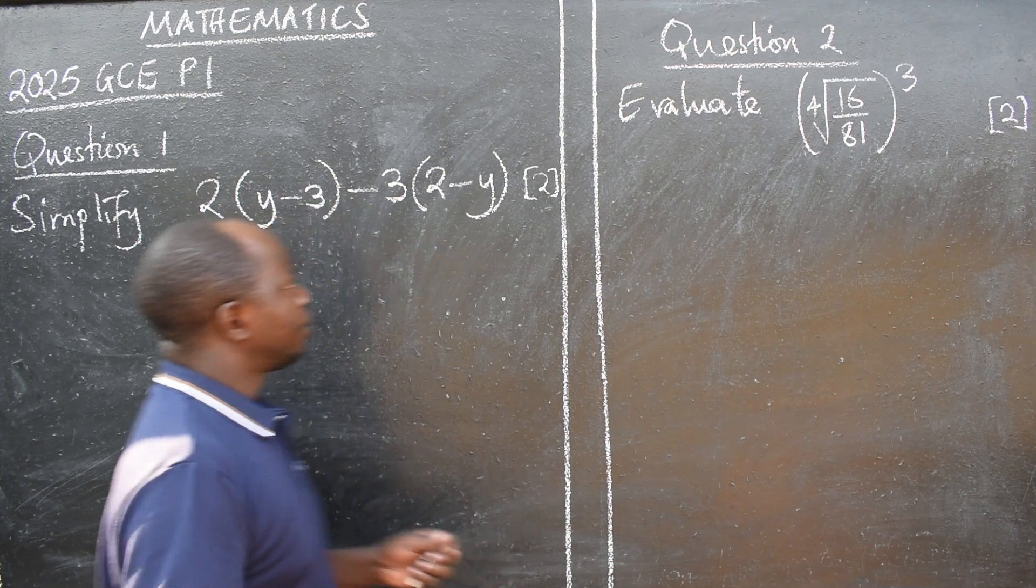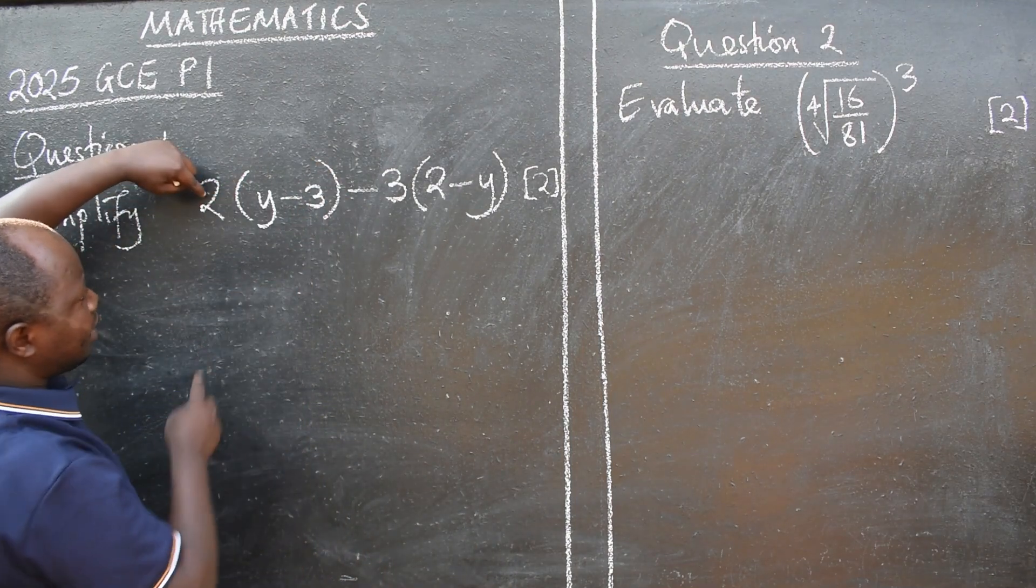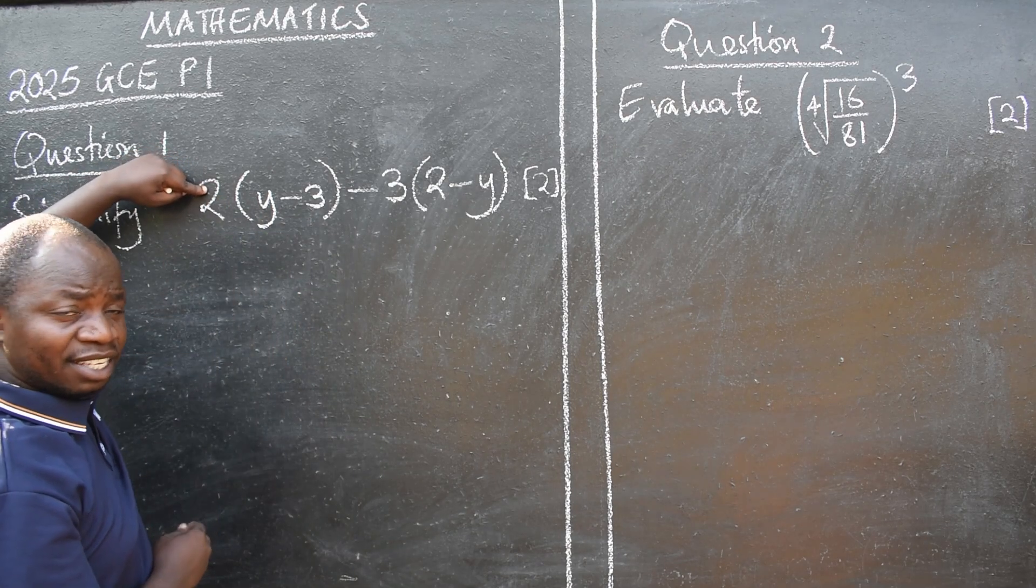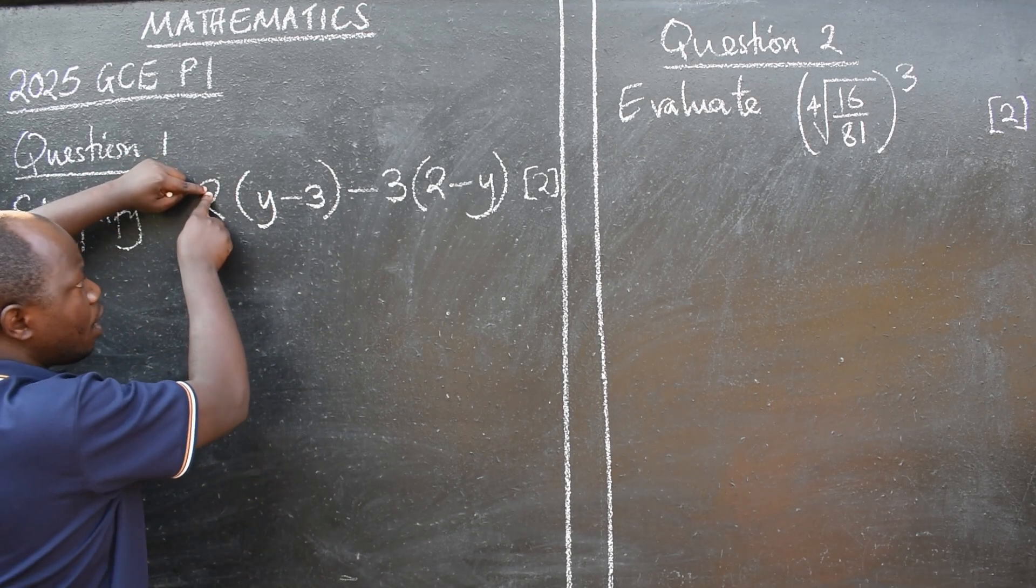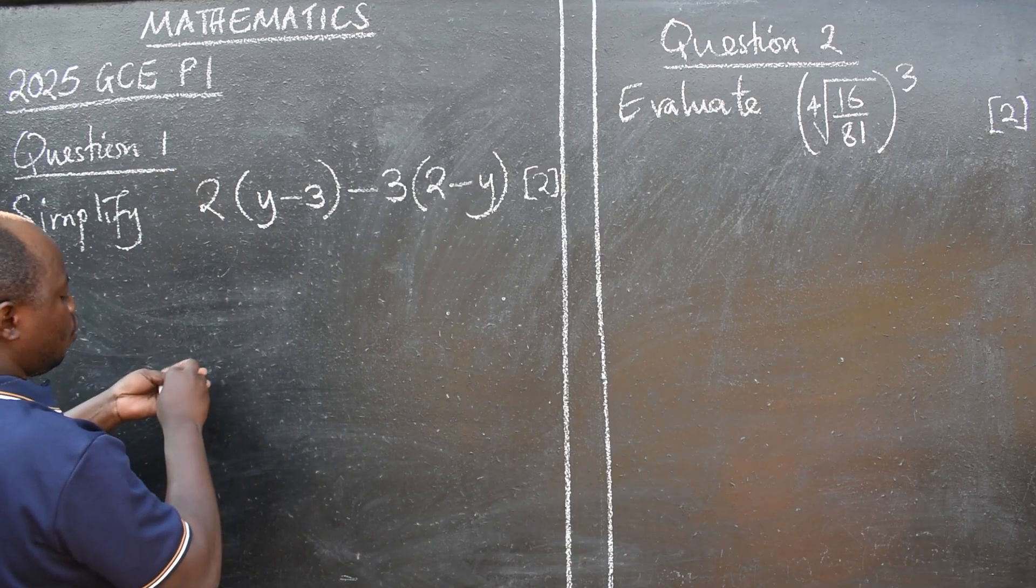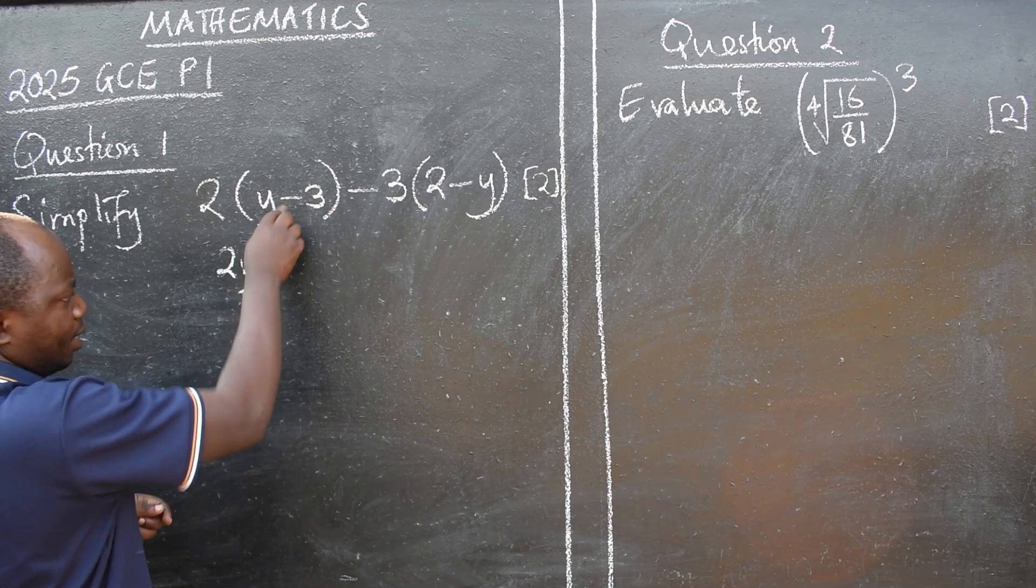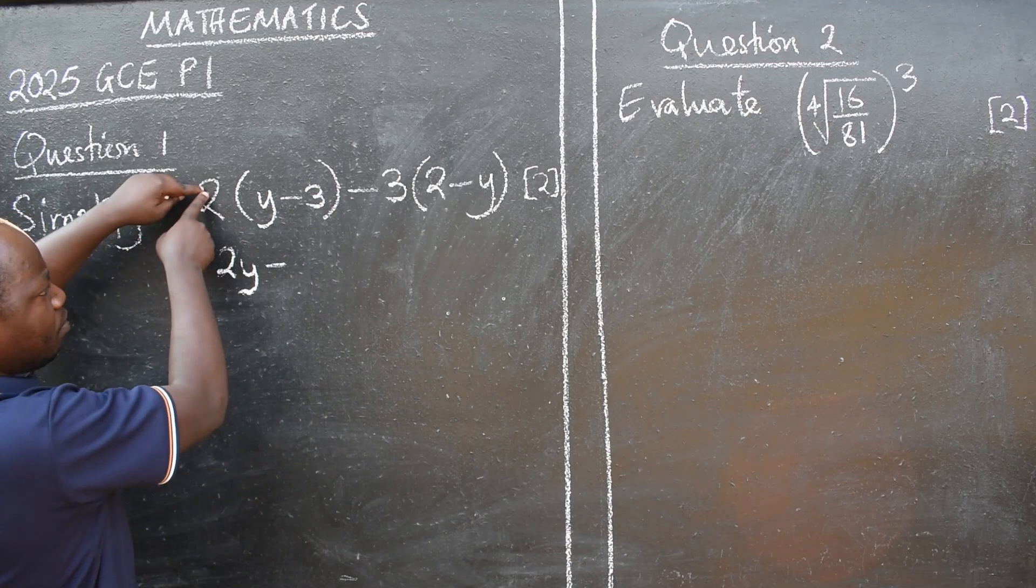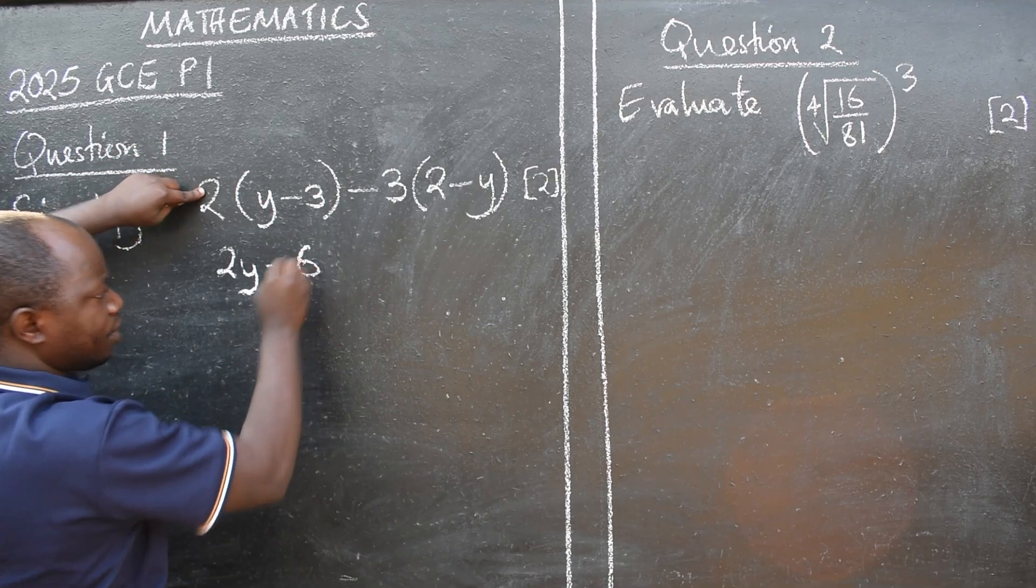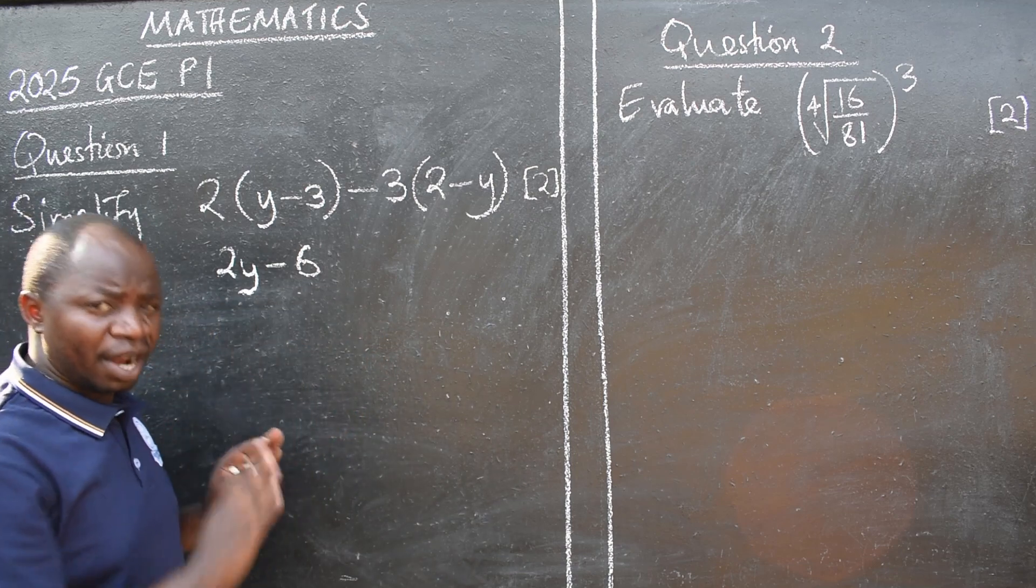So we are going to remove the brackets. How? You are going to say, to get rid of these brackets, there is a number outside. It means I am supposed to multiply these two by everything inside. So it will be two multiplied by y. I will get two y minus the same two multiplied by three. It will give me six. I am done. This level, this stage, no brackets.